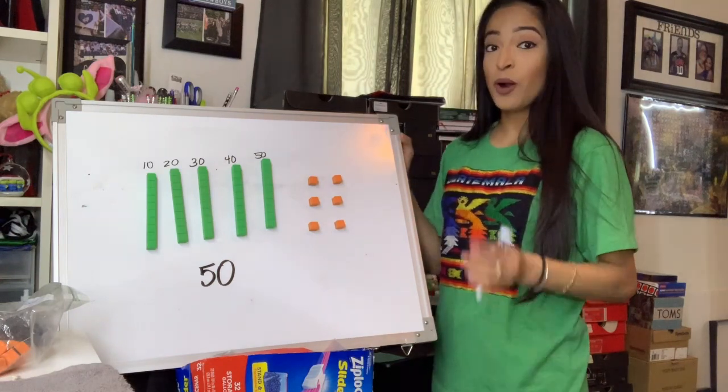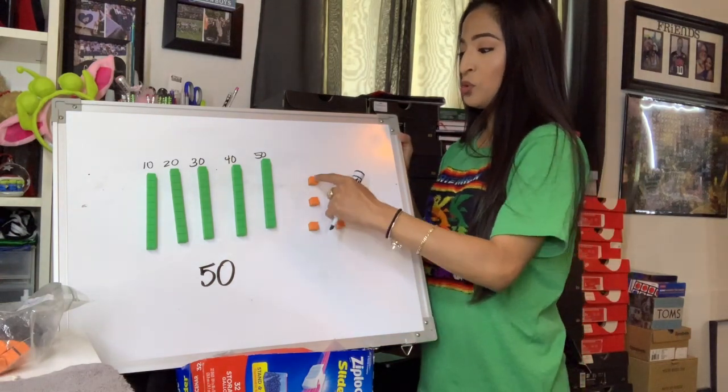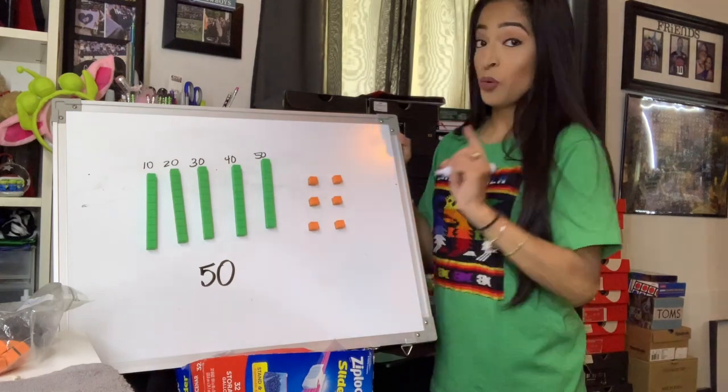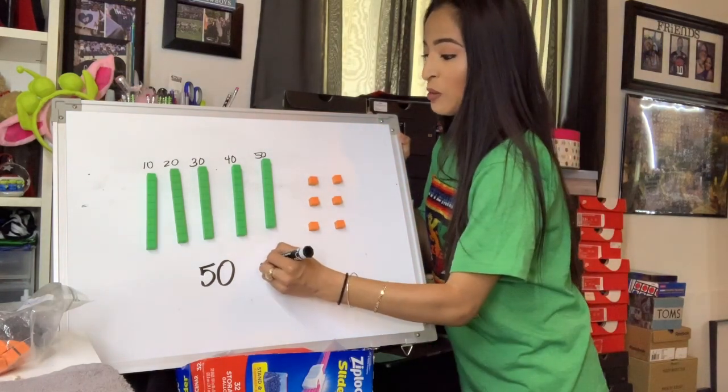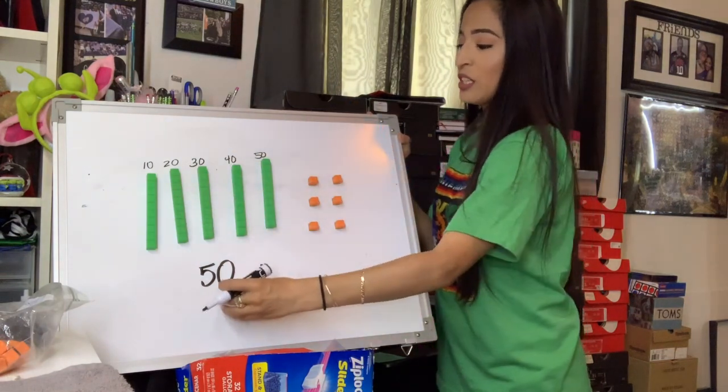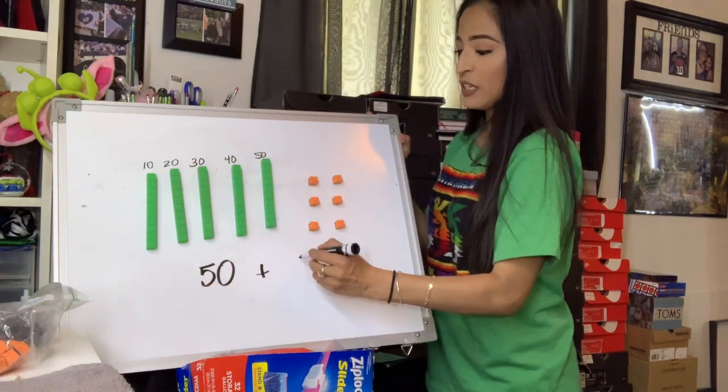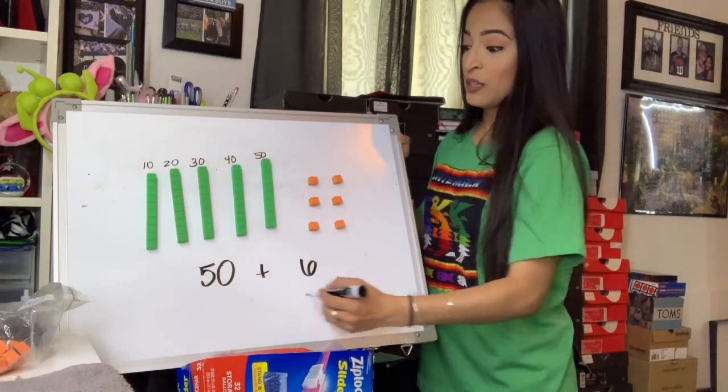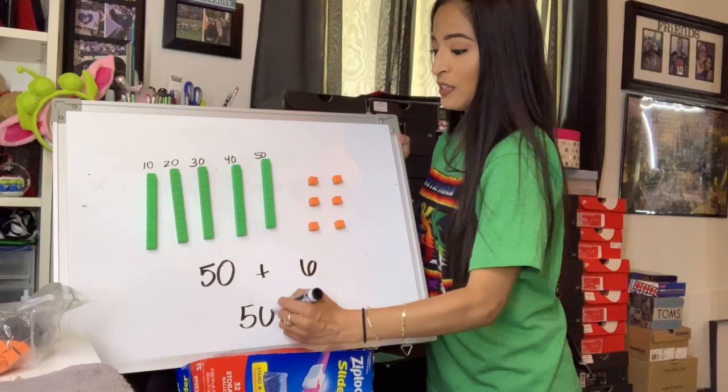And then we're going to count our ones. One, two, three, four, five, six. So the one thing that we cannot forget is our plus sign because we are adding the tens place with the ones place. So in this case, it would be 50 plus 6, which makes the number 56.